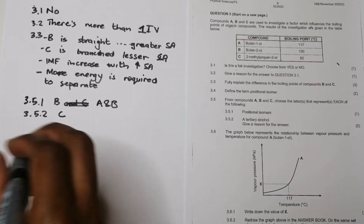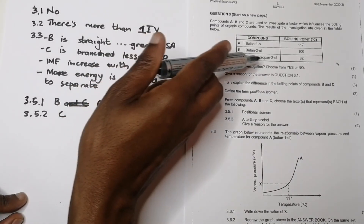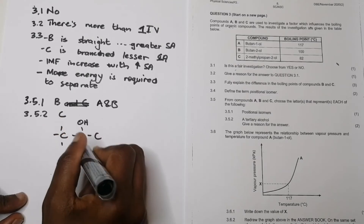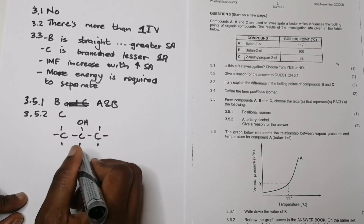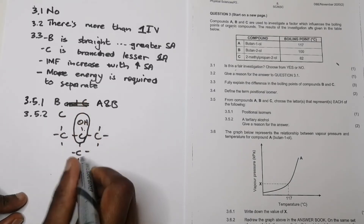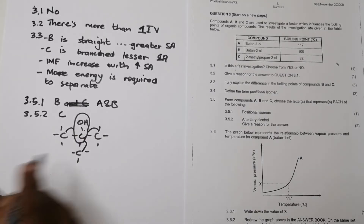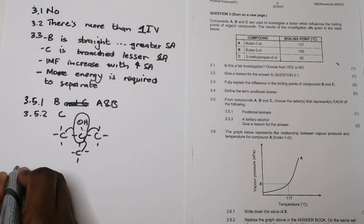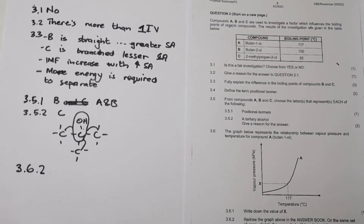For Question 3.5.2, which compound is a tertiary alcohol? The answer is C. The reason is that the carbon bonded to the functional group (OH) has three other carbons directly linked to it. For comparison, a primary alcohol has one carbon next to it, and a secondary alcohol has two carbons next to it.